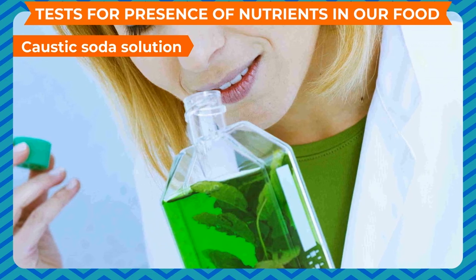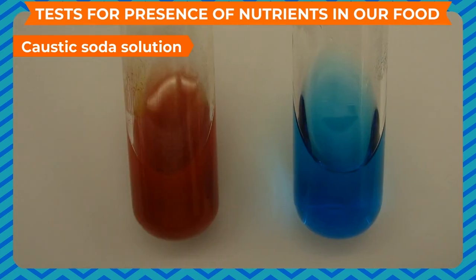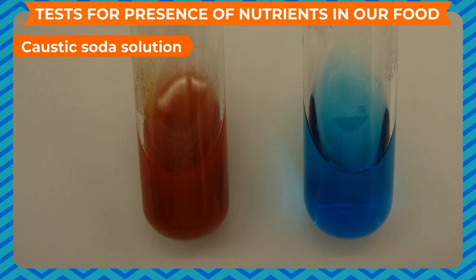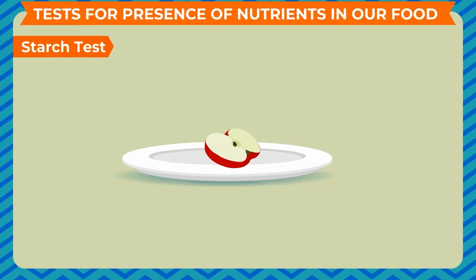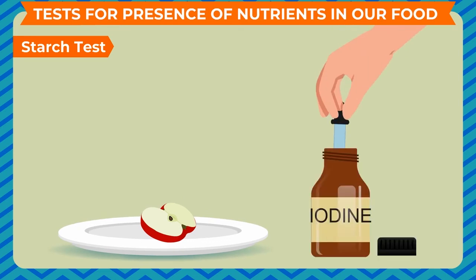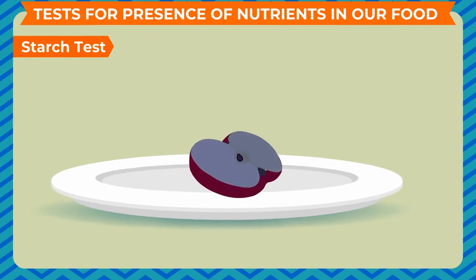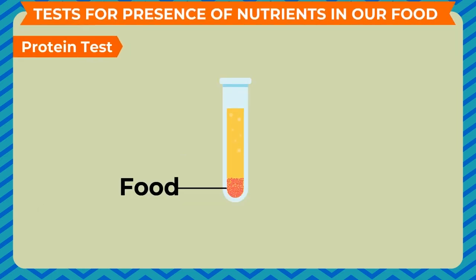The starch test for carbohydrates: carbohydrates in our food are found as starch and sugars. To test for the presence of starch, take the cooked or raw food item in a petri dish. With the help of a dropper, put two to three drops of iodine solution on the food and wait for two minutes. If the brown-colored iodine turns blue-black, the presence of starch in the food is confirmed. You can test as many food items as possible to check for the presence or absence of starch.